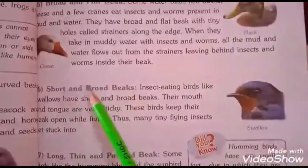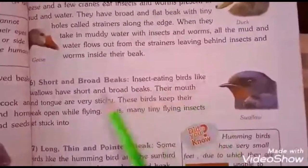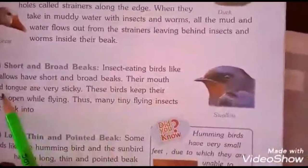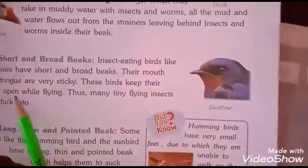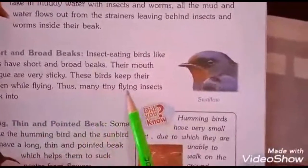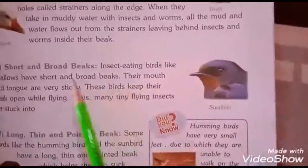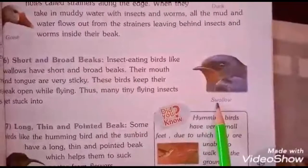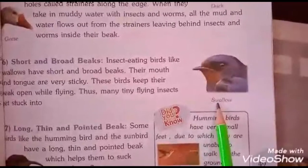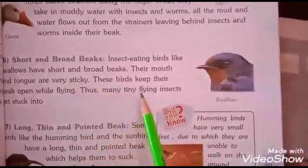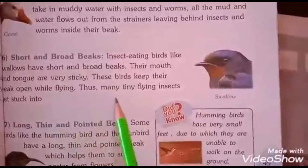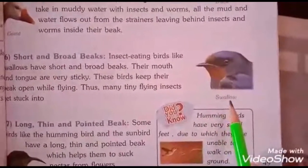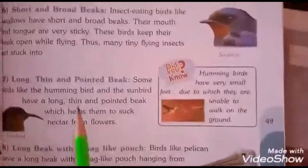The sixth type is the short and broad beak. Insect-eating birds like swallows have short and broad beaks. Their mouth and tongue are very sticky. These birds keep their beak open while flying, and many tiny flying insects get stuck into their beak.